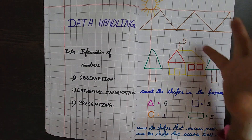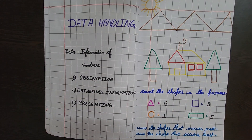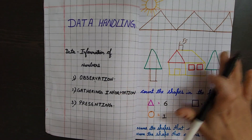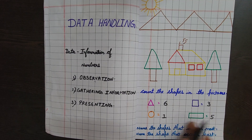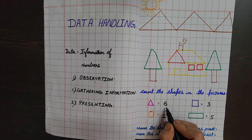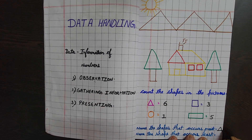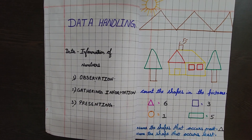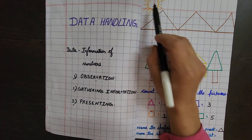Now two questions based on this scenery. Name the shape that occurs the most — that is triangle, because it appears six times. Name the shape that occurs the least — that is circle, only one. This is presenting the information.